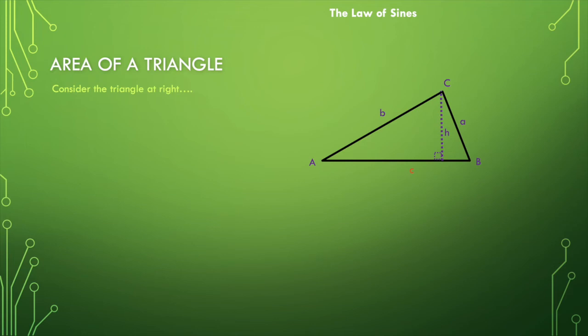Let's talk about an extension of the law of sines — how to find the area of a triangle when you don't necessarily know the information you previously would have needed in order to find that measurement.